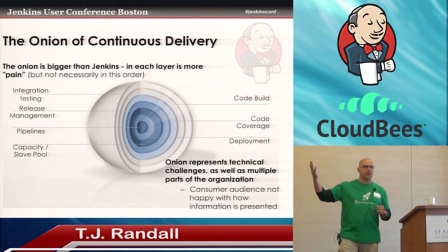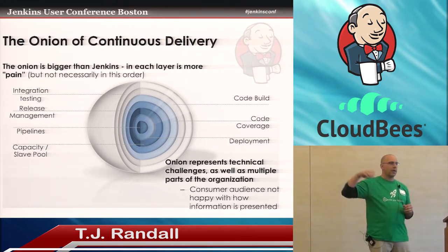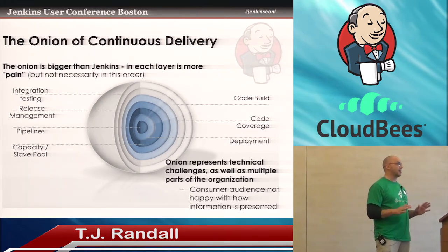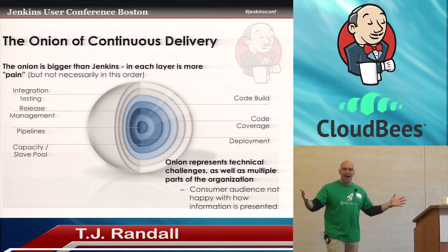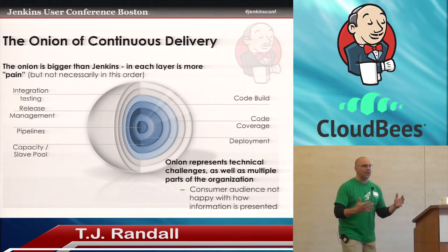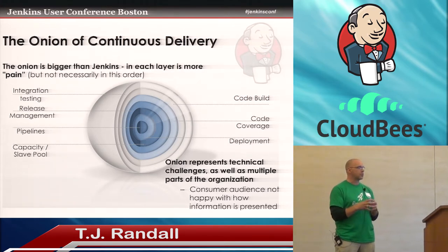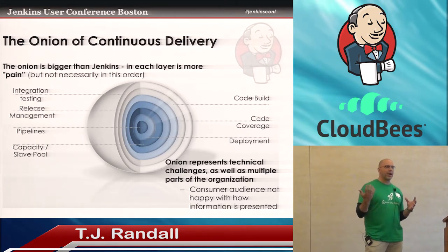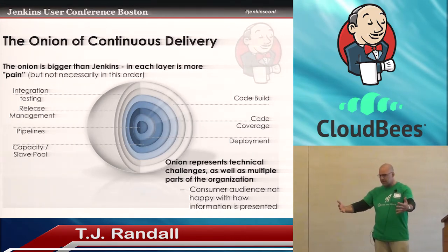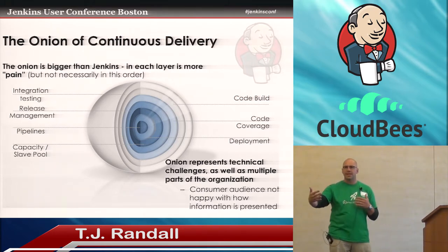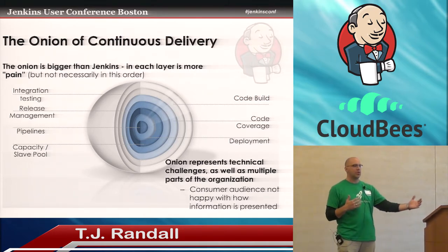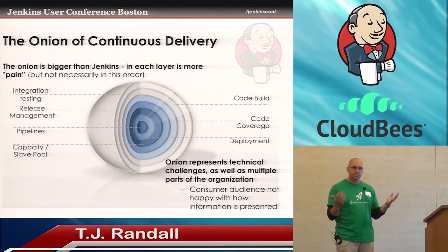Do we have QA folks in the room today? Any DBAs? How is it that we talk about continuous delivery and DevOps, but then we have teams that run as individual silos? If you've ever had the experience where you automate your deployments in development, everything's working well to integrate in testing, and then you try to move that into QA and all of a sudden a team says we don't want that in our environment—it happens.